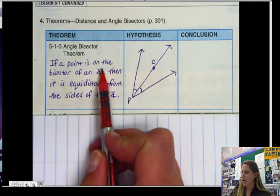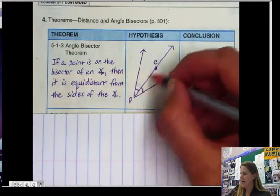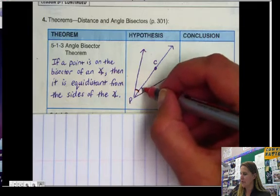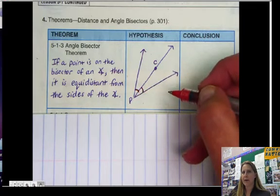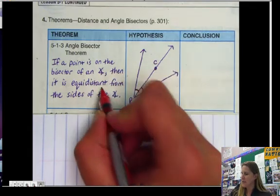The angle bisector, if a point is on the bisector of an angle, so here we have point C on the bisector because this is congruent to this, so we know it's a bisector, then that point is equidistant from the sides.